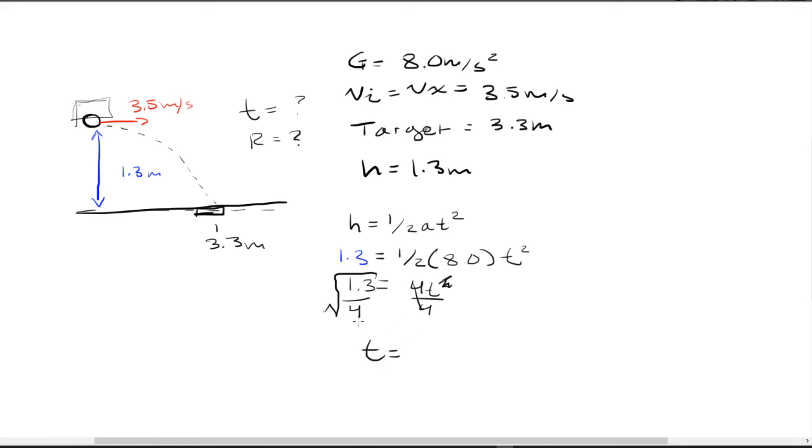So the t is going to be equal to 1.3 divided by 4, and all of that, the square root of all that. So if we see what the magical calculator wisdom has to say, the final answer is going to be equal to the square root of 0.325, which equals 0.57 seconds.